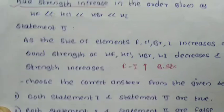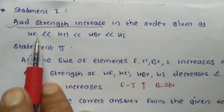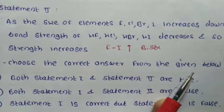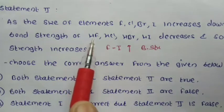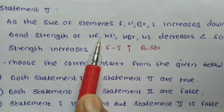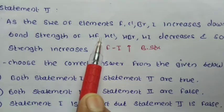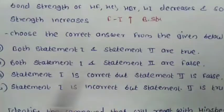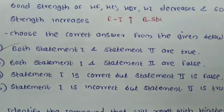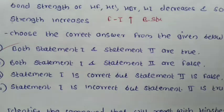Both statements are correct: acid strength of HF, HCl, HBr, HI increases, and as atomic number increases the size increases but bond strength of hydrogen-halogen bond decreases, so acid strength increases. The correct answer is C — both statement 1 and 2 are true.